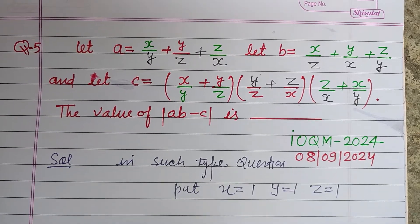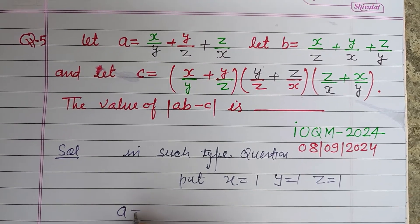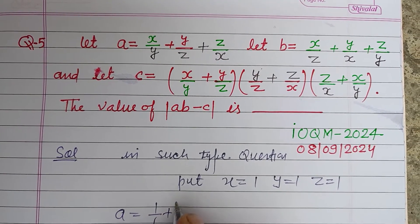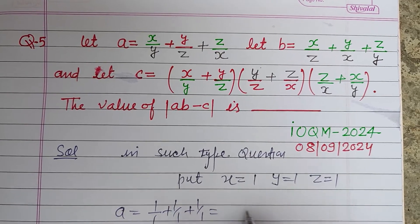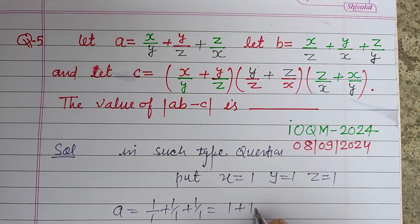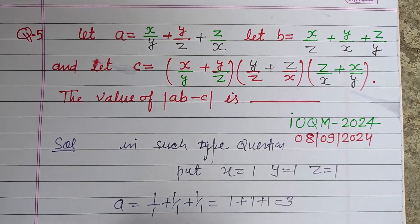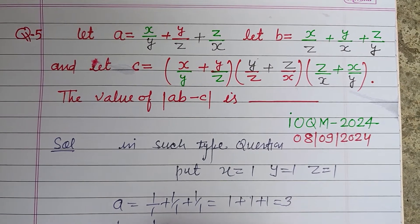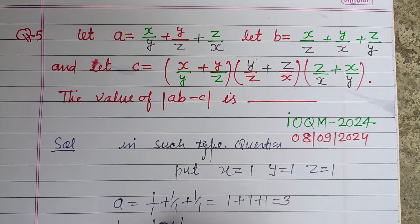You will get a equal to 1 over 1, 1 over 1, 1 over 1, that is 1 plus 1 plus 1, that is 3. And b is also 1 over 1 plus 1 over 1 plus 1 over 1, that is 1 plus 1 plus 1, that is 3.